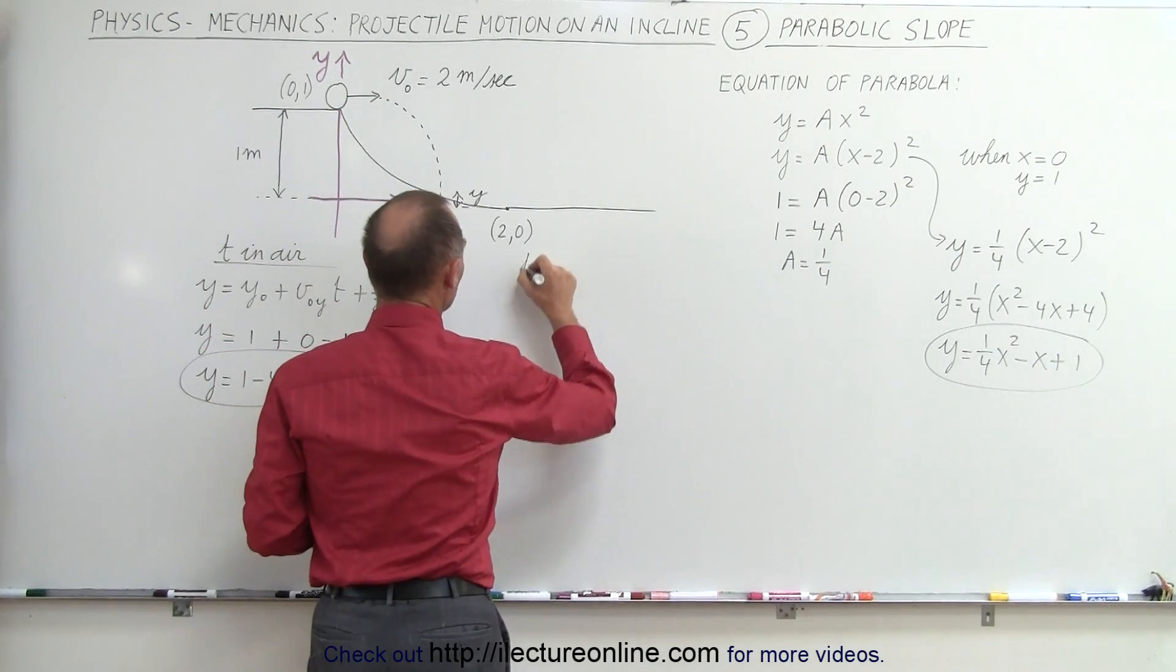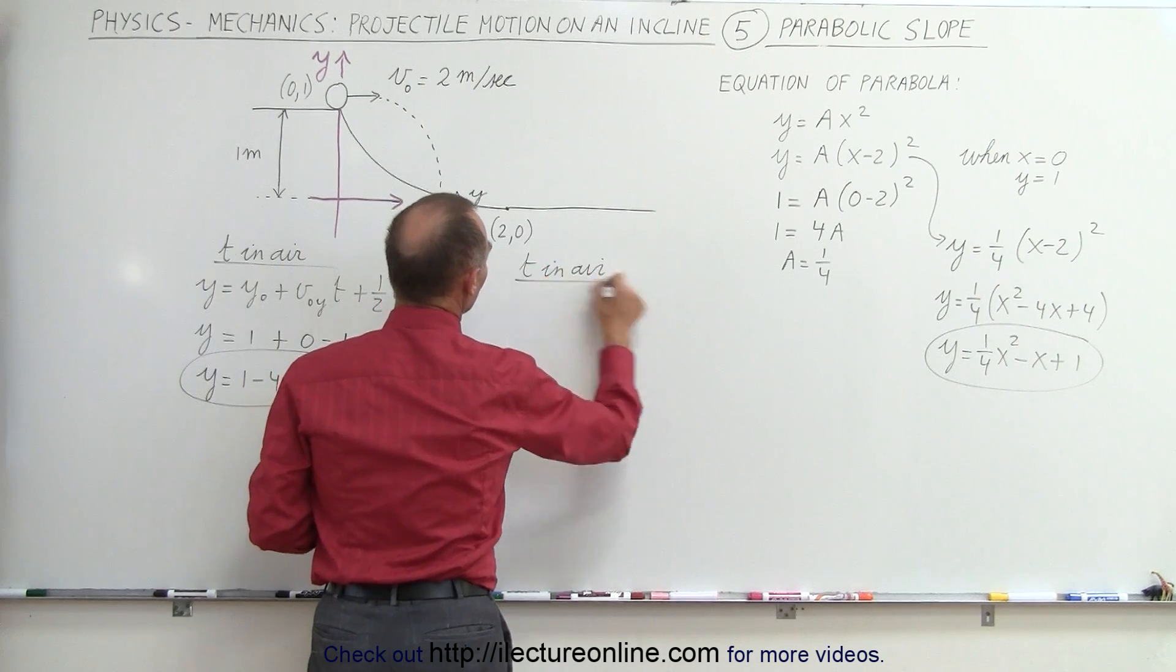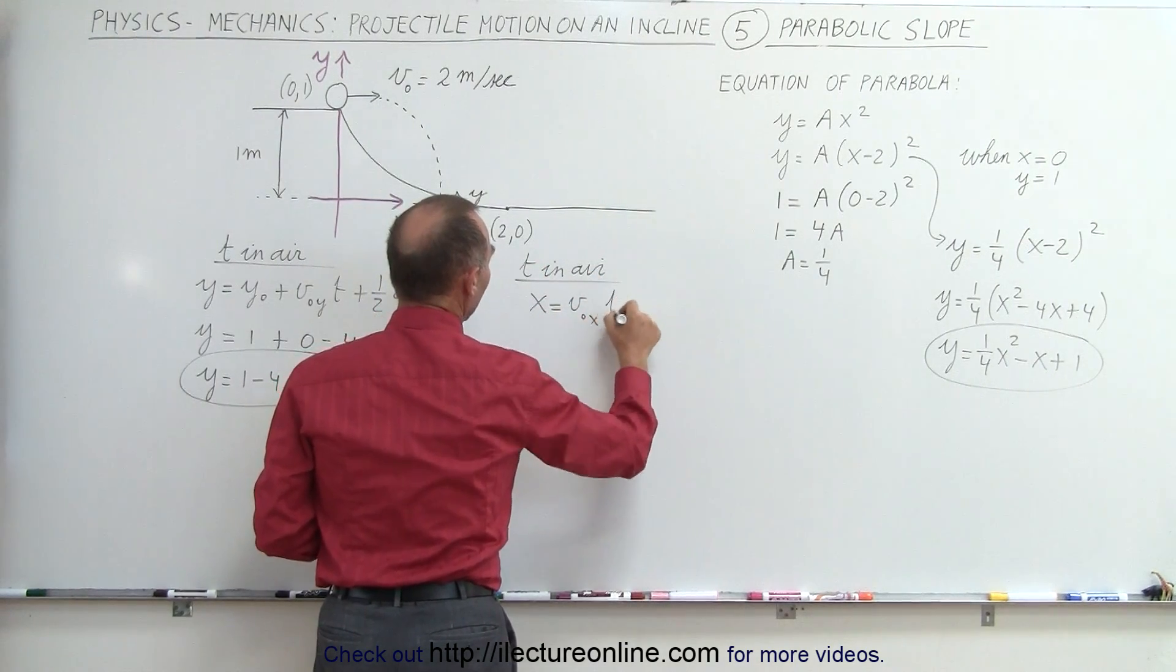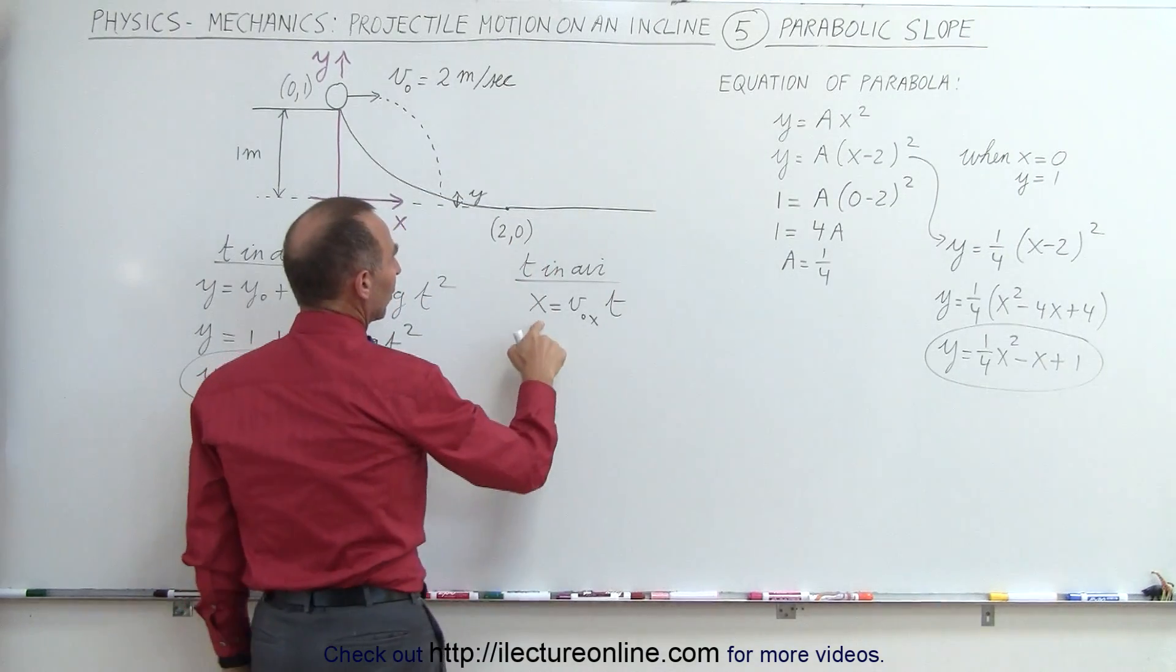So using the x direction, time in the air, we simply get x equals v initial in the x direction times time. Plug in what we know.